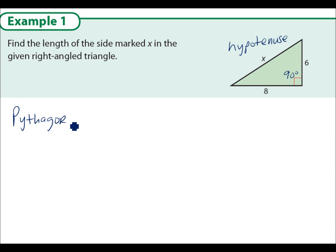Now Pythagoras' Theorem states that a squared is equal to b squared plus c squared, where a is the hypotenuse. So in this case, a will be x. And b and c, it doesn't matter which we choose to be b and c. So we say x squared is equal to 8 squared plus 6 squared.